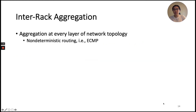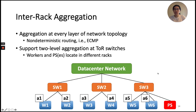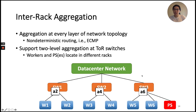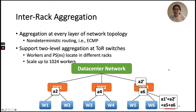To support large-scale distributed training jobs, ATP designs inter-rack aggregation. Aggregation can be done at every layer of the network topology. However, doing aggregation at higher layers increases protocol complexity due to ECMP-like non-deterministic routing. To minimize network changes, our solution is to support two levels of aggregation by deploying ATP only at ToR switches. ATP's inter-rack aggregation happens when workers and PS are located at different racks. Aggregation is first done at the local ToR switch, then partial results are sent to the PS ToR switch for a second level of aggregation. With this approach, ATP can scale up to 1024 workers.